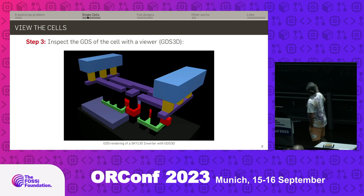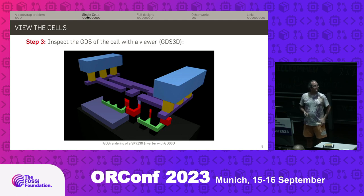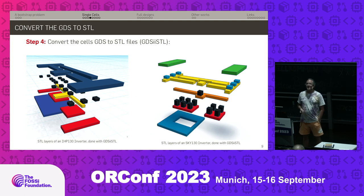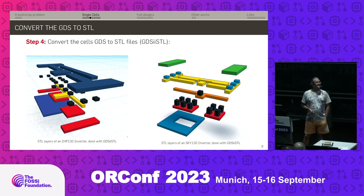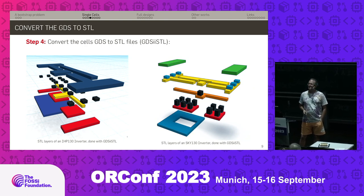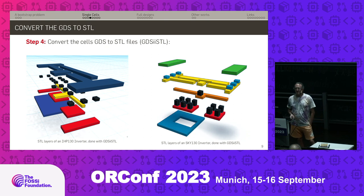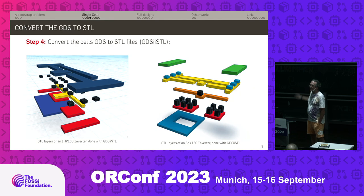This is an inverter cell from Sky130. In that viewer, you can turn around, zoom in, and explore it. From there, when you have the GDS, you can move on to get STLs. STLs are outside of the microchip industry — it's just a 3D exchange format, especially for 3D printing or 3D modeling. These are the layers from the GDS already converted to STL. On the left side is an IHP inverter in 130 nanometers; on the right side are the layers for a Sky130 inverter.